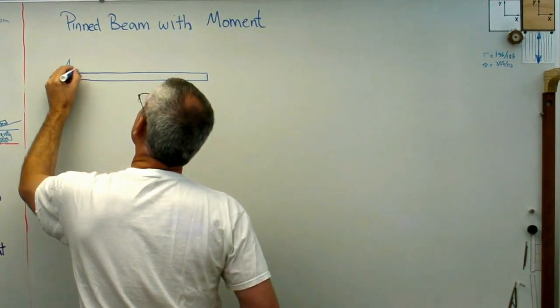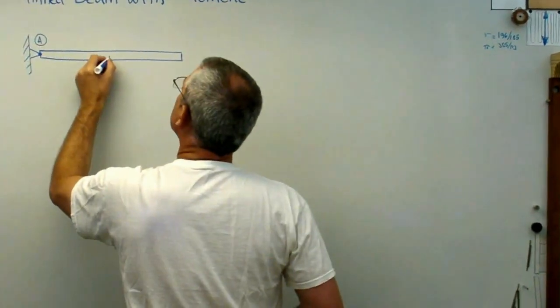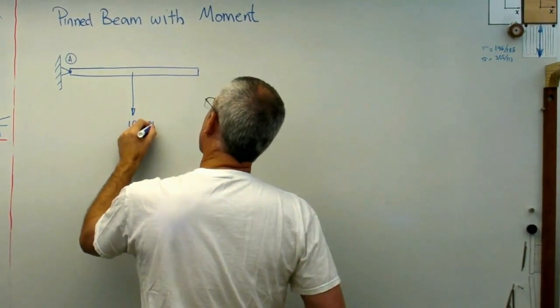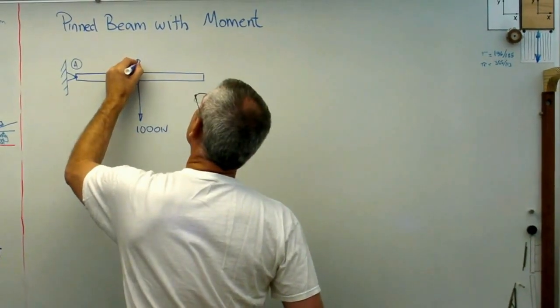It's pinned at the left end, and I'll call that point A. Let's say there's a big weight hanging from the middle of it. That's a thousand newtons, and I'll call this point B.